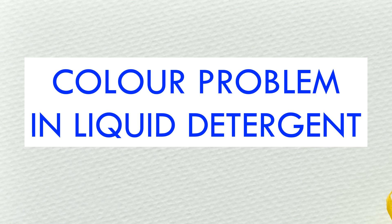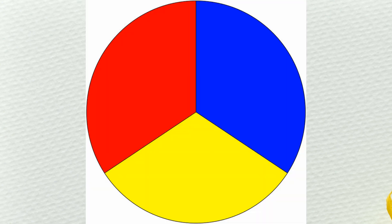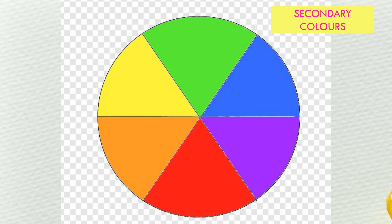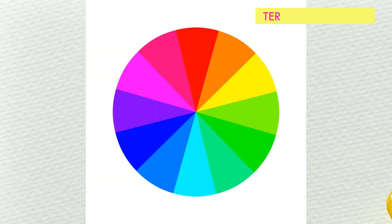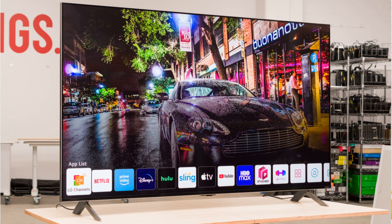When we add blue color to liquid detergent, the color changes to green. To understand why this is happening, we need to refer to color theory. Color theory is a chapter in physics. It states there are only three primary colors: blue, yellow, and red. By mixing primary colors we get secondary colors, by mixing secondary colors we get tertiary colors, and this continues — giving us many more colors. No matter how many colors we see on a 4K TV or 8K TV or in a paint catalog, they all come from only three primary colors.